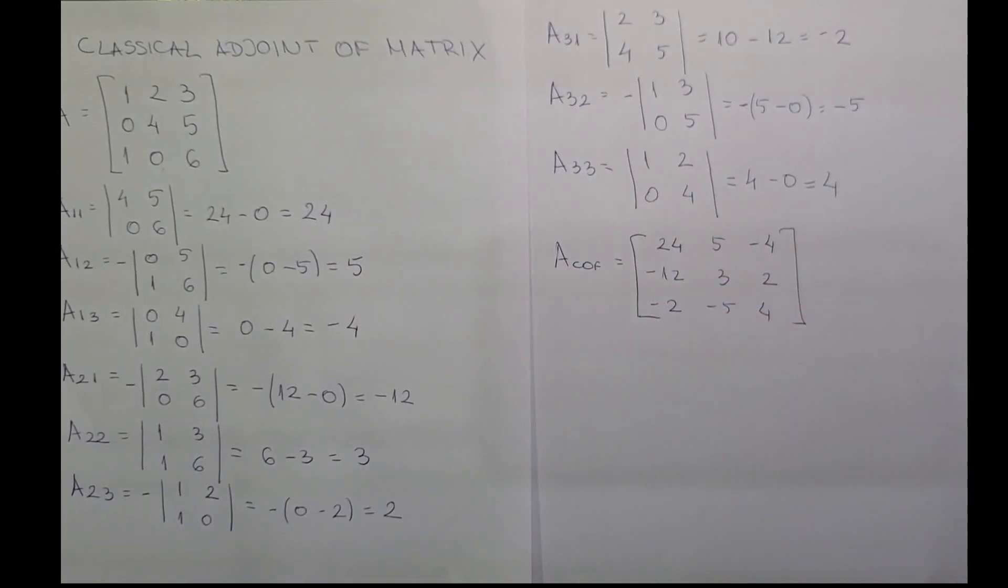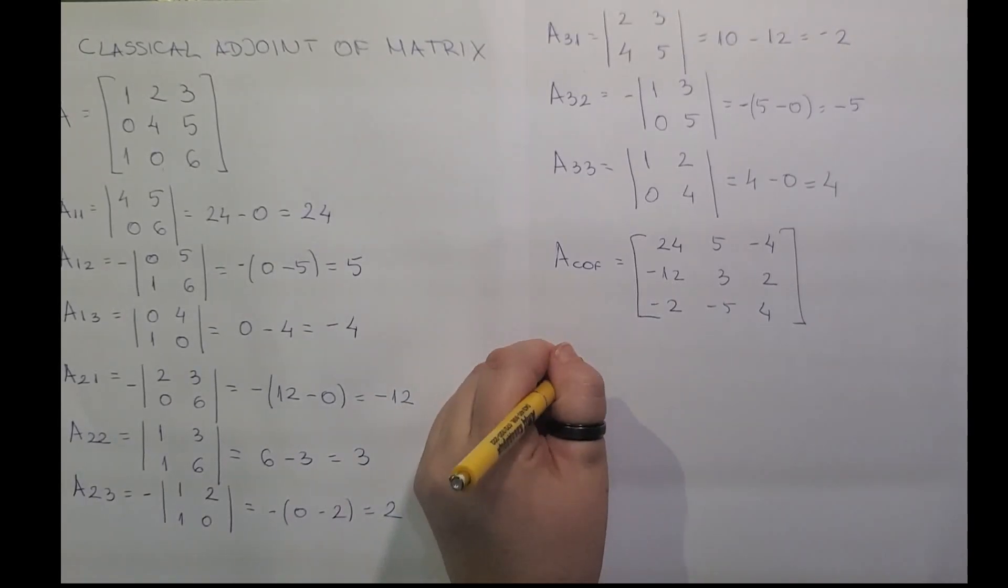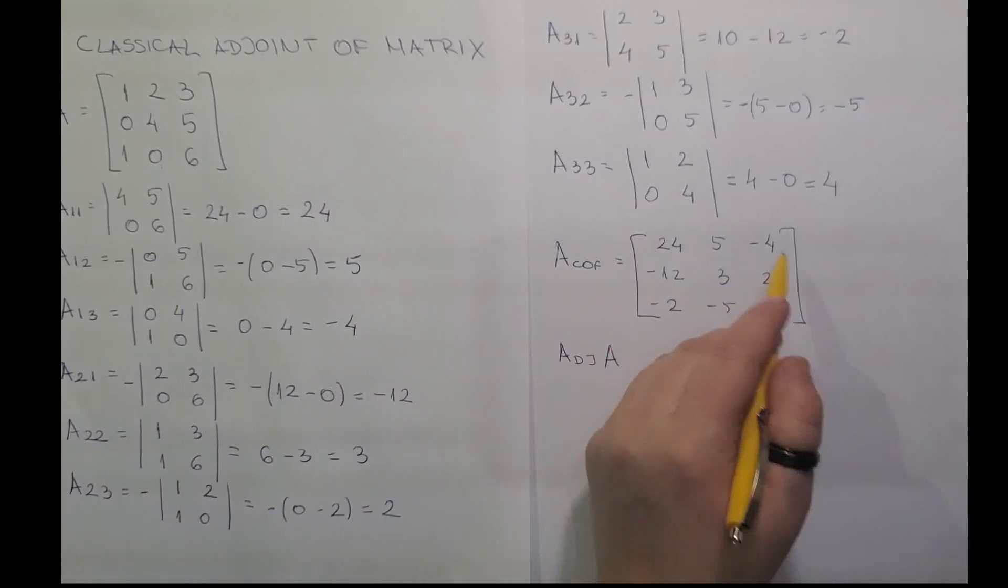Now this is not the end. At the end we need the adjoint of A and it is the transpose of the cofactor matrix. So the adjoint of A is the transpose of this matrix.